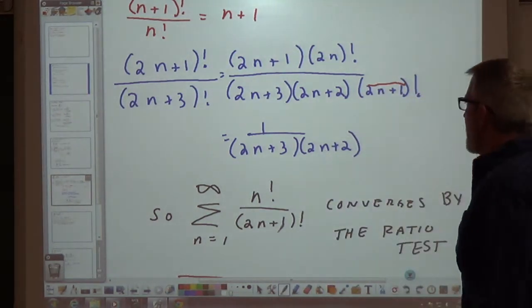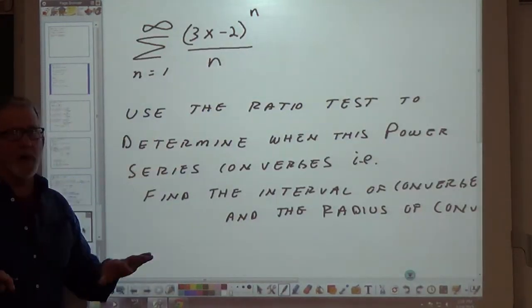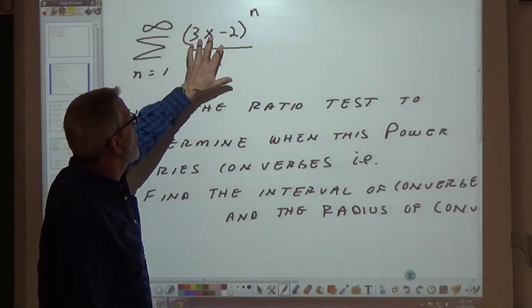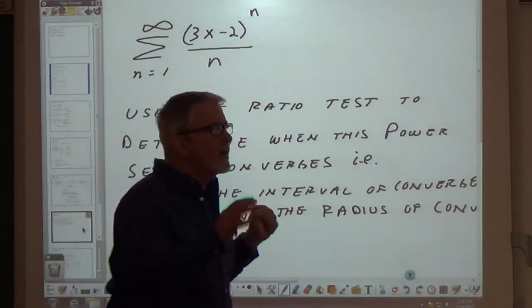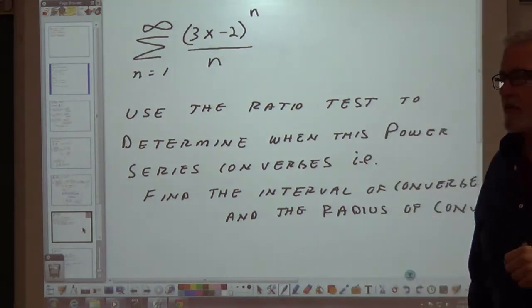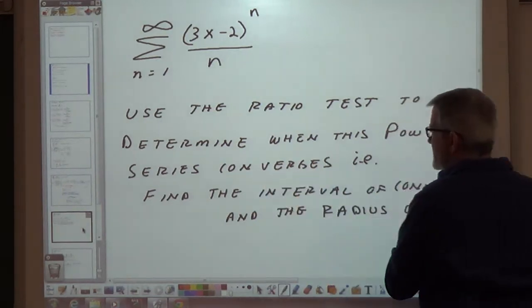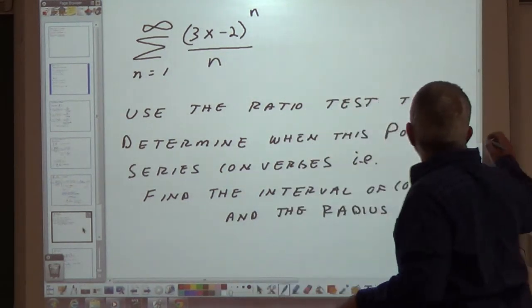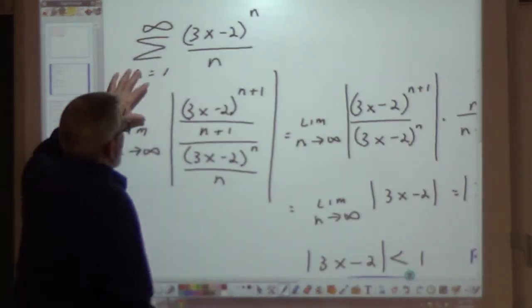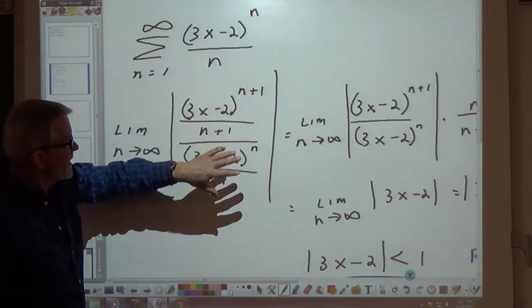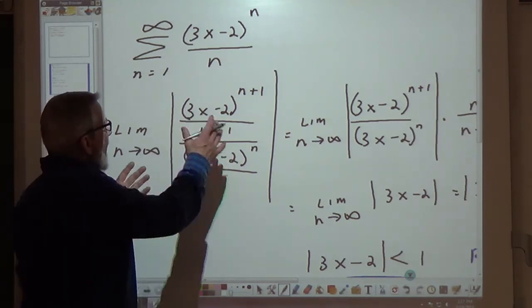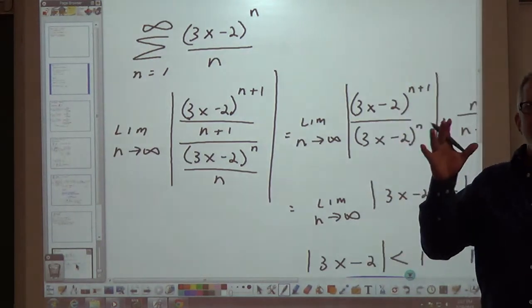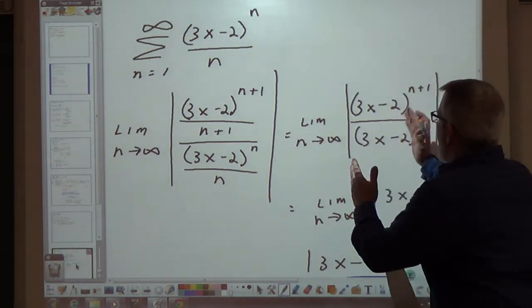One more example — please pause if you need to. We're going to look at this power series: the sum from n equals 1 to infinity of (3x−2)^n over n. We're going to see where that converges, and we're going to think about the interval of convergence and the radius of convergence. Let's use the ratio test to determine when this power series converges.